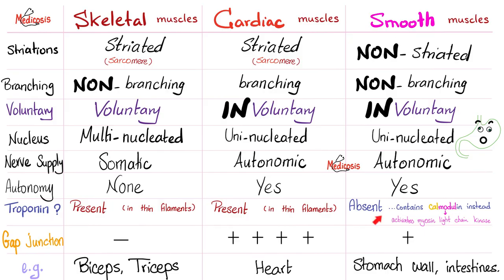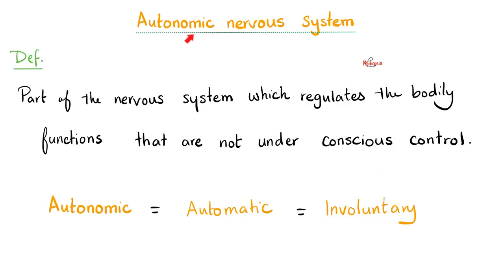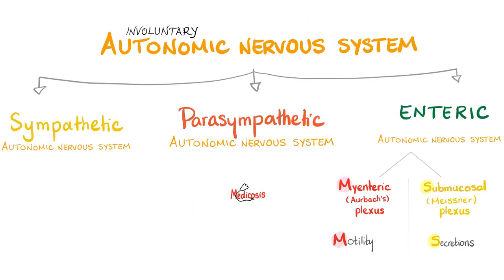Your gut has its own autonomy — the enteric nervous system. Instead of troponin, your gut uses calmodulin. They have gap junctions (nexus), which is why they can contract as one unit called a syncytium. The pacemaker of your gut is the enteric nervous system via the interstitial cells of Cajal. To excite the smooth muscles of your gut you need calcium influx. The autonomic nervous system — which is not under conscious control — includes sympathetic, parasympathetic, and the enteric nervous system.